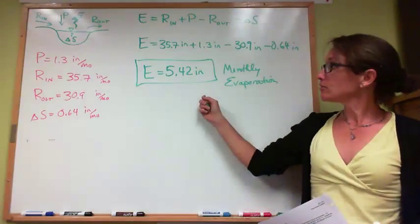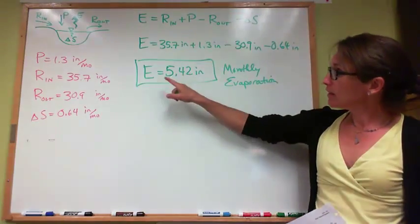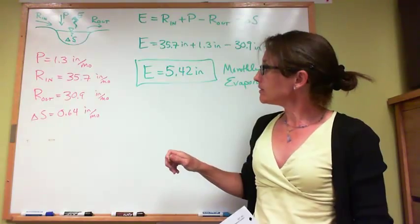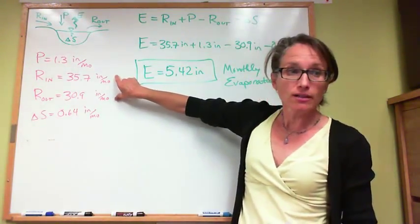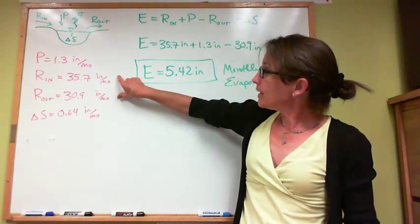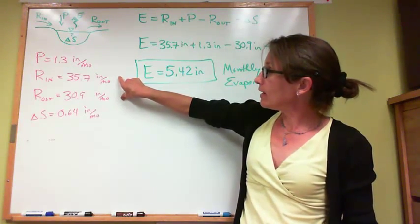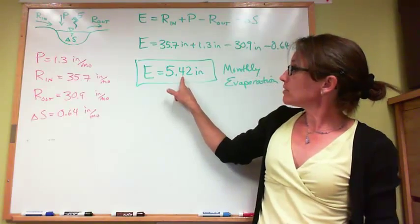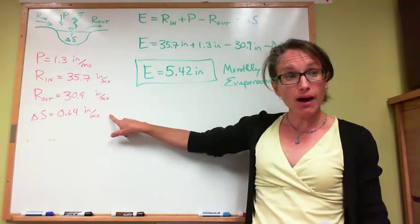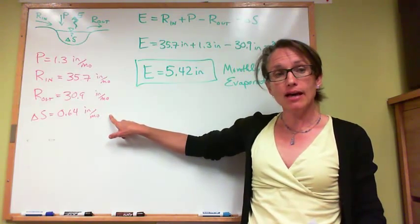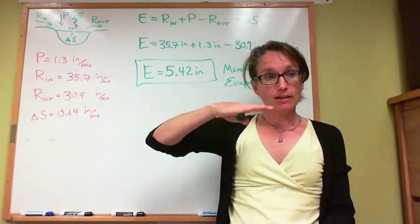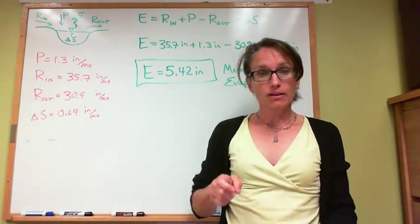That's the solution to our problem. It's interesting to compare the magnitude of the different hydrologic processes. We can see that runoff in and out are our biggest volumes of flow. Evaporation exceeds precipitation. Our change in storage is positive, meaning there's more inflow than outflow into the lake, so the lake level is rising.